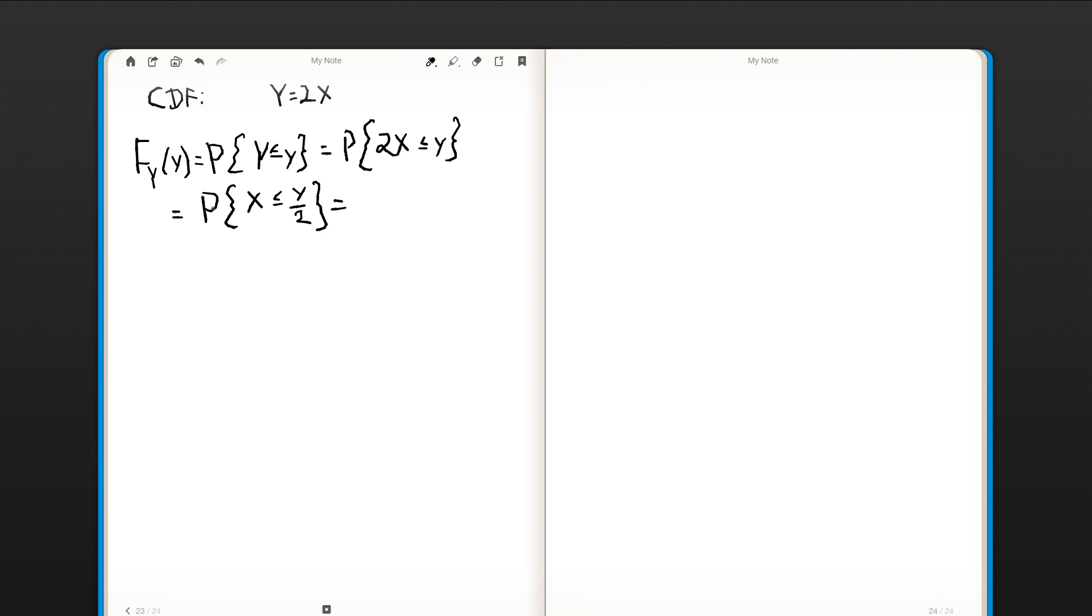But this is the cumulative distribution function of x. Because the only thing we have here is x. So this is equal to F—and I'm just going to be really clear—F of X evaluated at y over 2. If they had asked for the cumulative distribution function of the random variable y, we would be done. But they didn't. They asked for the PDF.